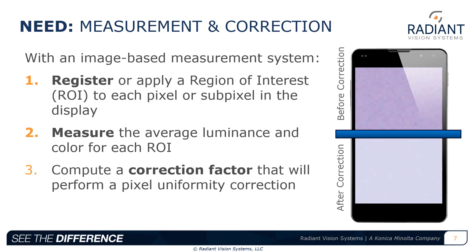This creates the need for measurement and correction. To address uniformity issues across pixels, the procedure applies these steps. Using an image-based measurement system, we must first register each pixel in the display, or create a region of interest (ROI) that isolates each pixel for measurement. Second, we must measure the average luminance and color within that ROI. And then finally, we need to compute and apply a correction factor, adjusting the output of the measured pixel to align with the output of other pixels in the display to a standard tolerance. Correcting uniformity in a display must be based on accurate measurement data — the key challenge is how do we ensure accurate measurement data.